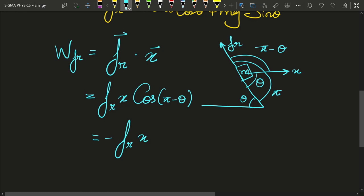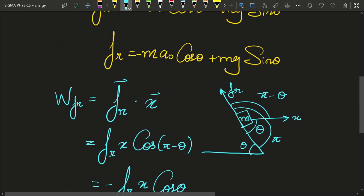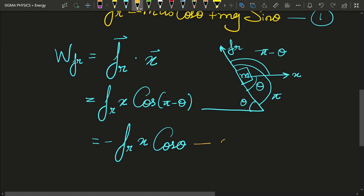And cos of pi minus theta is nothing but minus cos theta. So I will get minus fr x cos theta. And if I call this as equation 1 and this one as equation 2,